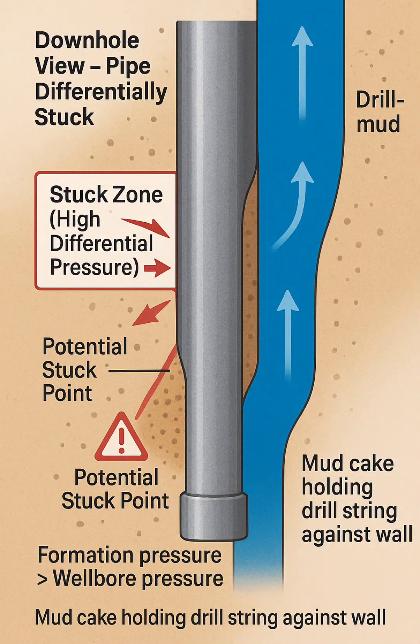Red arrows from formation pointing toward pipe: These arrows visualize differential pressure pushing the pipe against the wellbore wall.